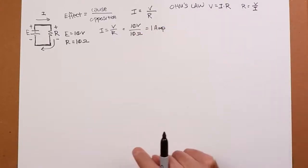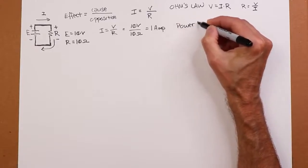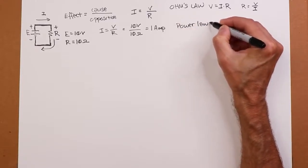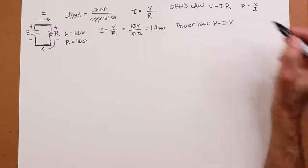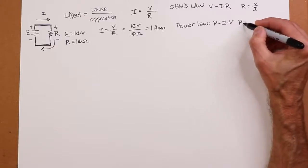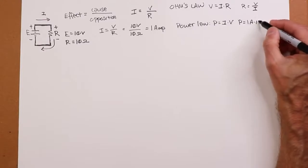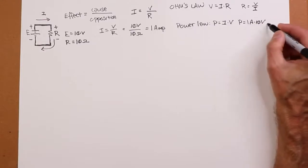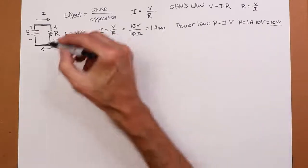Now, last time around, we also looked at power law. And we said power law P equals I times V. So in our case, we have 1 amp of current and the voltage of course is 10 volts. So 1 times 10 is 10, and that's in watts. Amps times volts is watts. We have 10 watts of power.